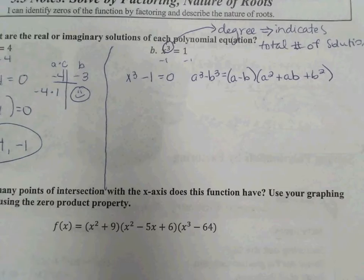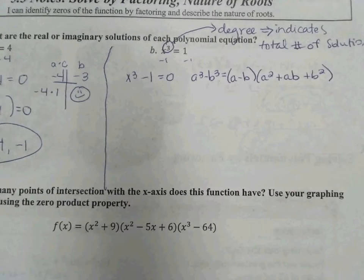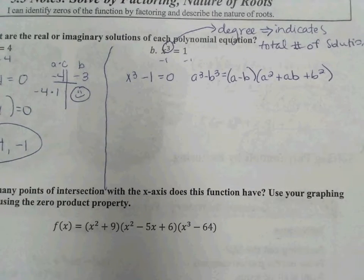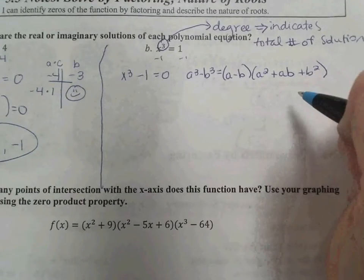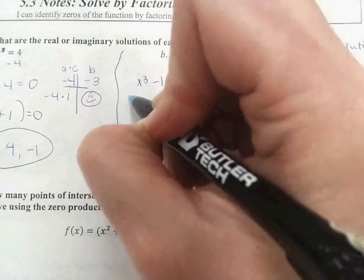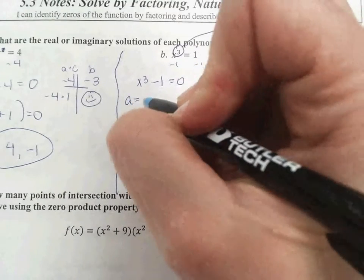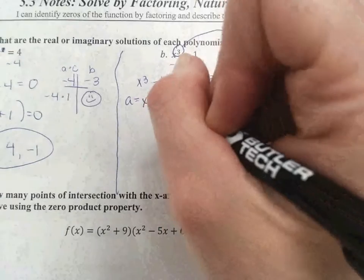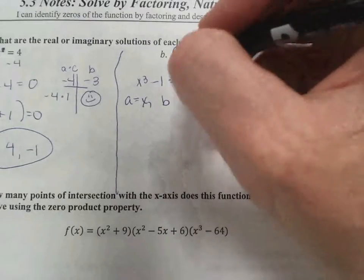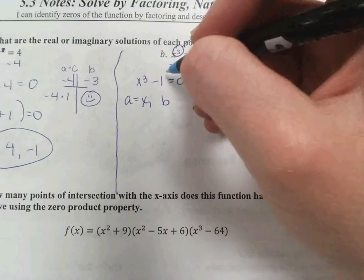Where did that a, b come from? This is the formula that you saw on the previous page. It's also up here on the board so you don't have to flip back and forth. So we have our a value. Since this is a cubed, our a value is just x. The cube root of x cubed is just x. And then our b value is the cube root of 1, which is 1.